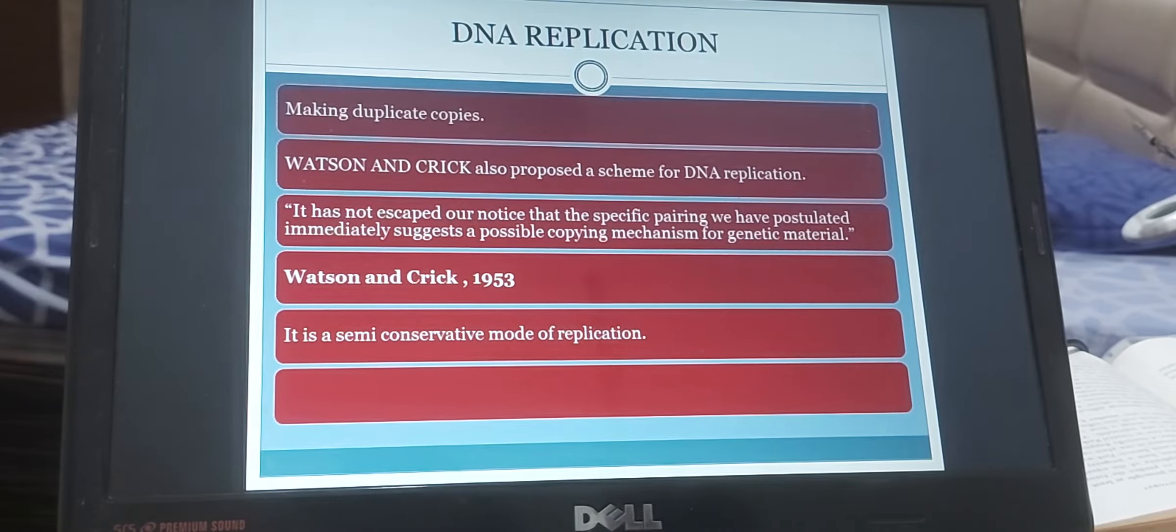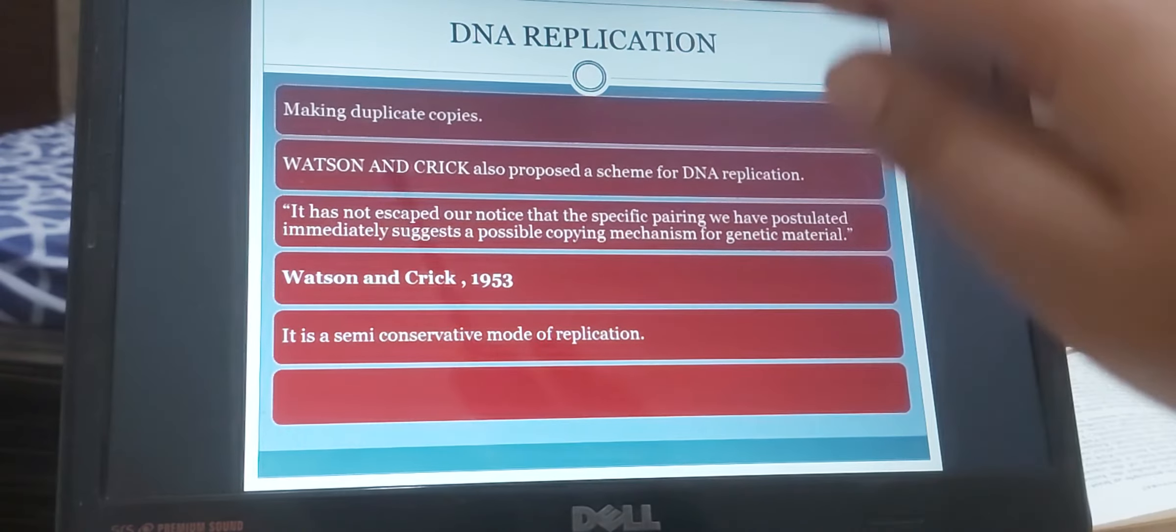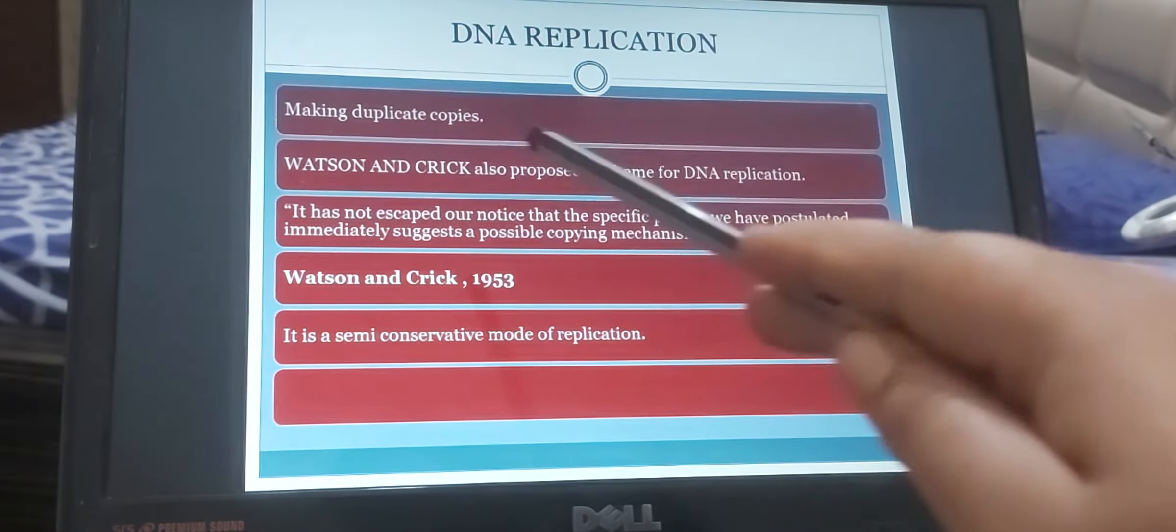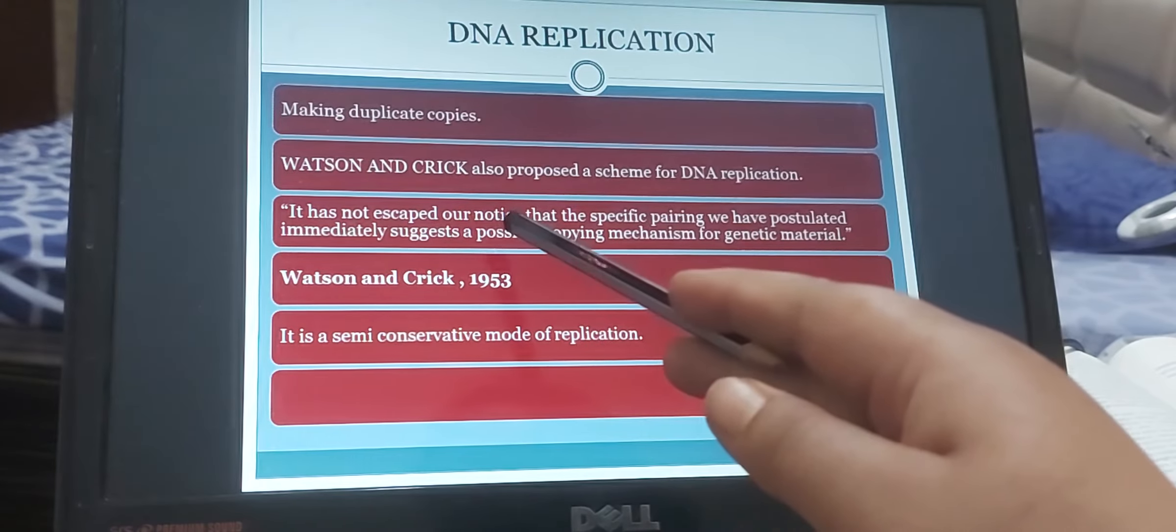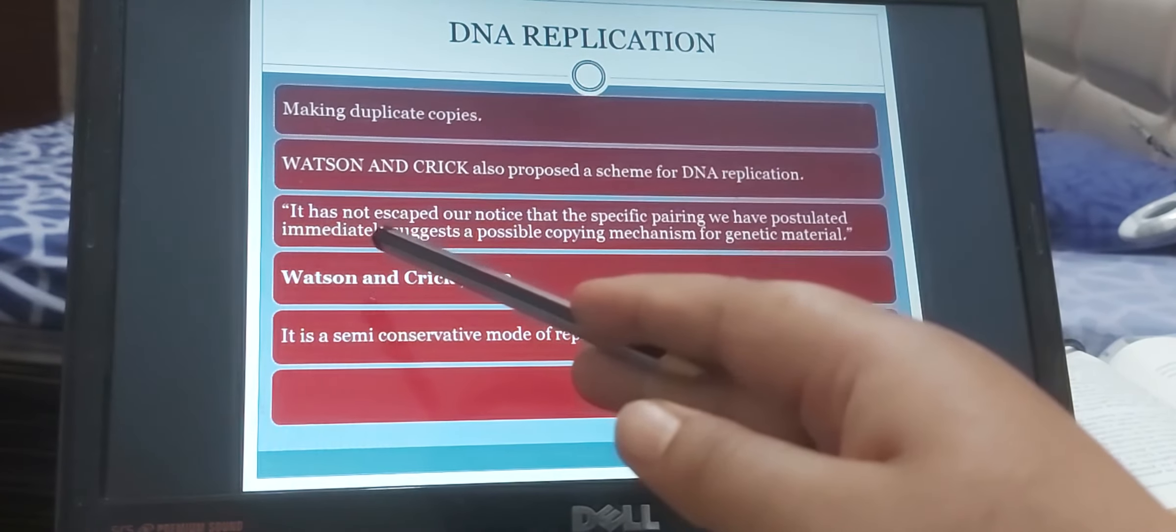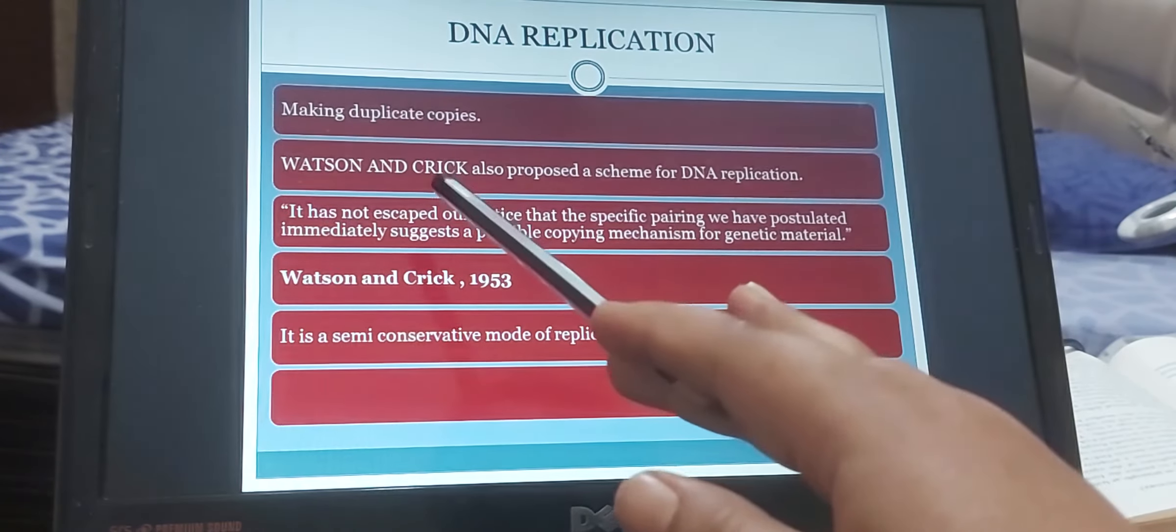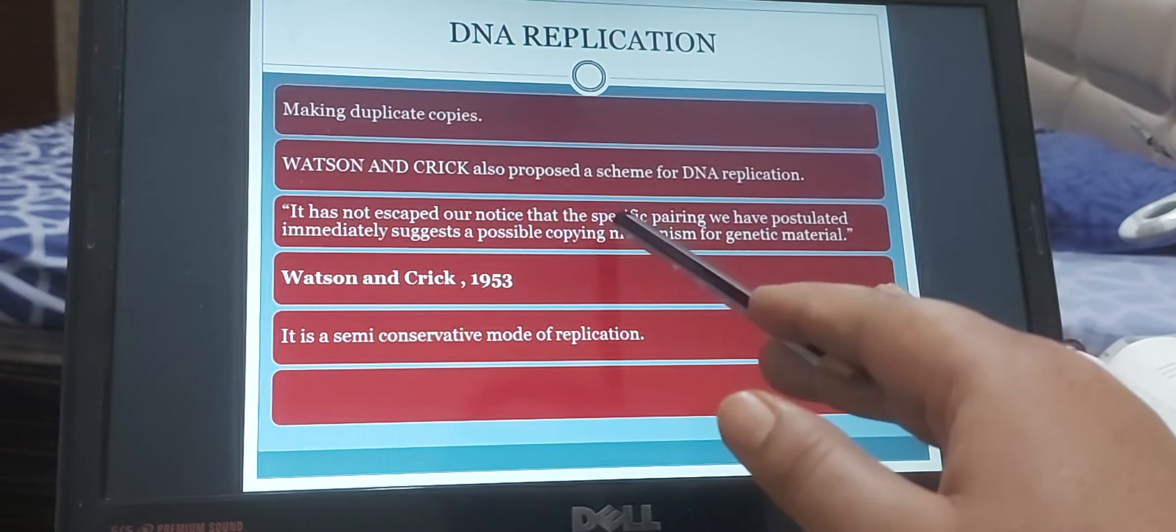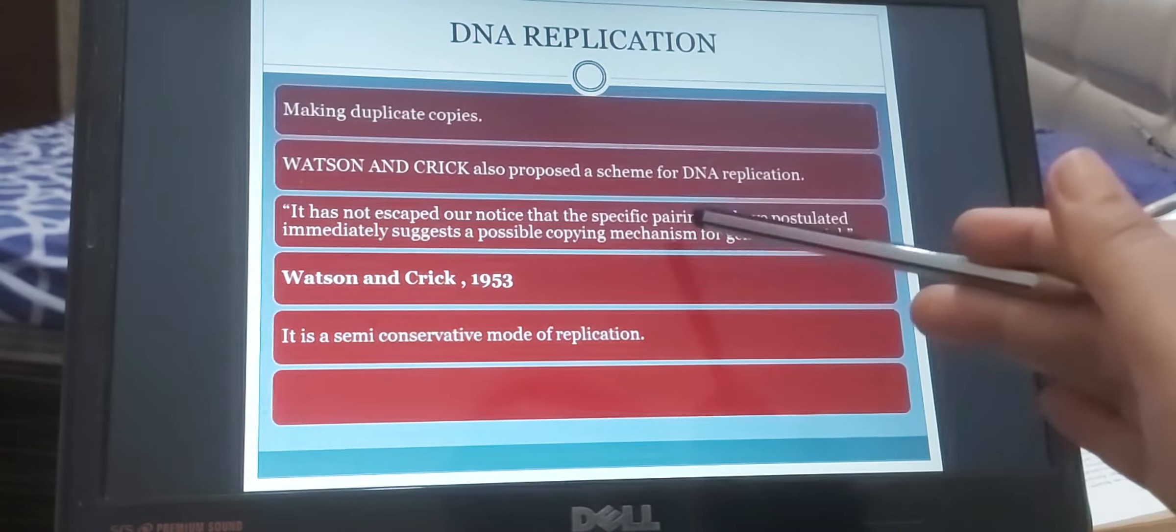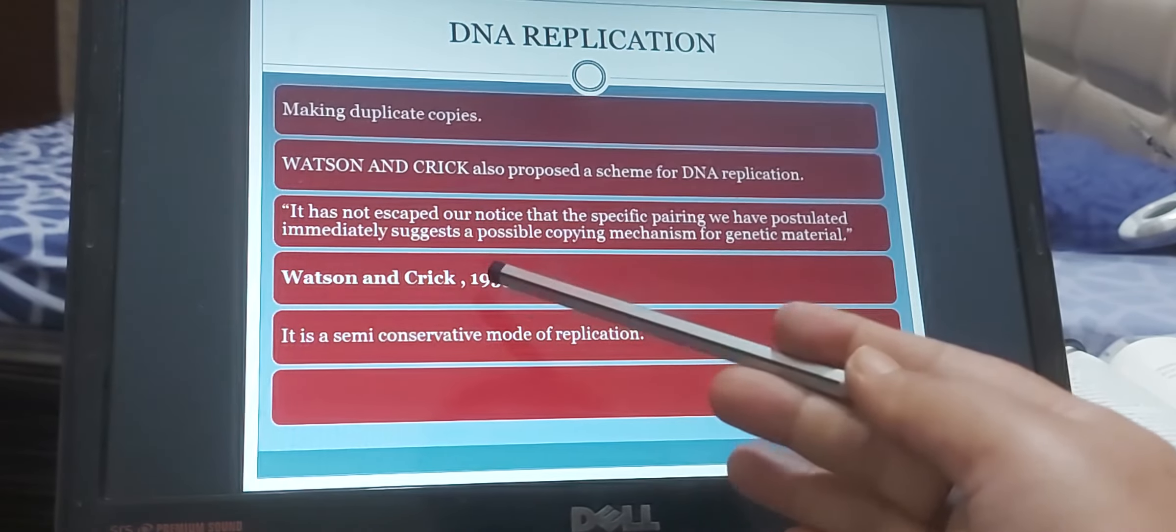So we know that Watson and Crick, they proposed that double helical structure of DNA. When they were giving that double helical structure of DNA, they also proposed a scheme for DNA replication. They said, it has not escaped from our notice that specific pairing we have postulated immediately suggests a possible copying mechanism for genetic material. Because base pairing will remain the same. So this statement was given by Watson and Crick in 1953.